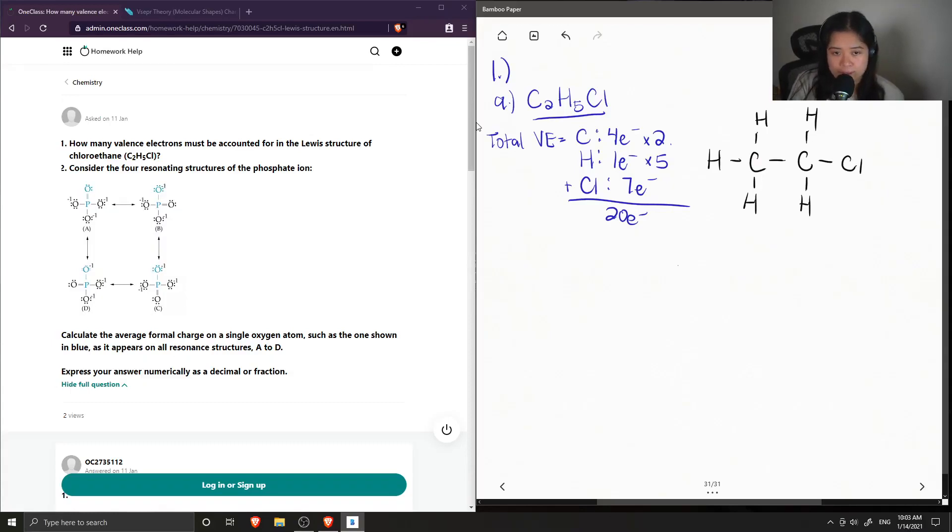So now notice my carbons and my hydrogens all have their full octet or doublet in the case of hydrogen. And for chlorine, we just need to add all of its lone pairs. So if we count out how many electrons are in this structure, each bond contains two bonding electrons. And we have one, two, three, four, five, six, seven bonds, so that's 14.